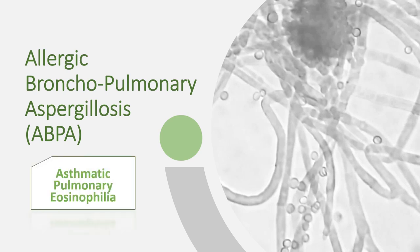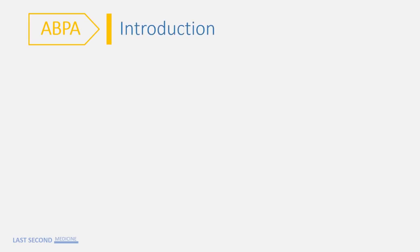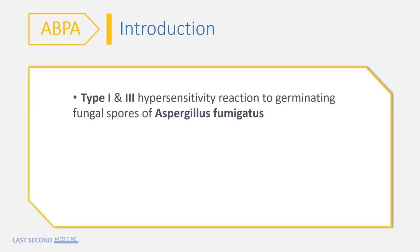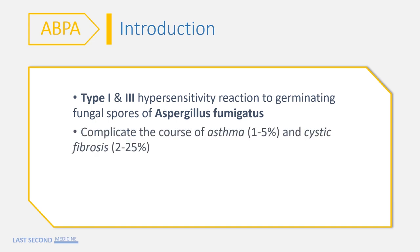Allergic bronchopulmonary aspergillosis is also known as asthmatic pulmonary eosinophilia. It occurs as a result of type 1 and type 3 hypersensitivity reactions to germinating fungal spores of Aspergillus fumigatus in the airway wall. The condition may complicate the course of asthma and cystic fibrosis, and is a recognized cause of pulmonary eosinophilia. The prevalence of ABPA is approximately 1–5% in asthma and 2–5% in cystic fibrosis.